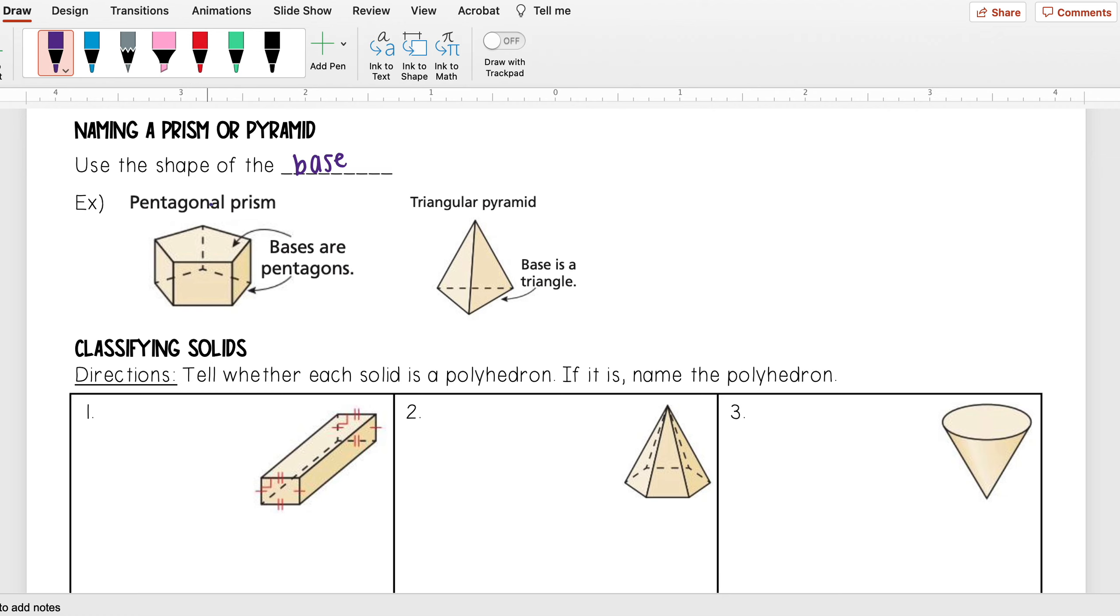So for example, for this first one I have pentagonal prism. So I just take the base shape, which here is a pentagon which we see right here, and I know that's the base because they are congruent and they're parallel from each other. I take that and put -al at the end—pentagonal—and then this is also a prism, so I add prism at the end.